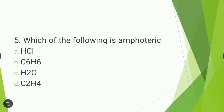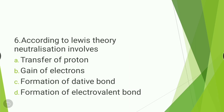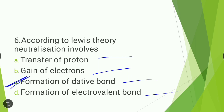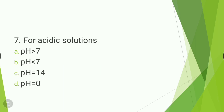Next question: according to Lewis theory, neutralization involves — transfer of proton, gain of electrons, formation of a coordinate bond, or formation of an electrocovalent bond? The answer is formation of a coordinate bond. According to Lewis theory, neutralization involves the formation of a coordinate bond.